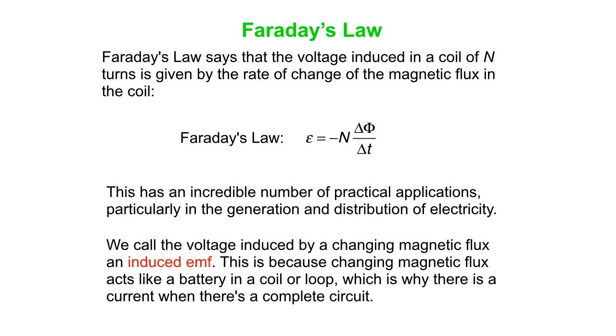So we call this voltage that is induced by a change of magnetic flux an induced EMF. Basically, changing the magnetic flux through a loop or a coil makes the loop or coil act like a battery. And so that's what drives a current. There's no battery actually there, but the circuit acts as if there's a battery in it when the flux through it is changing.